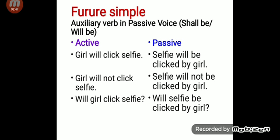So what we have seen here: selfie is the subject in passive form, will be is the auxiliary verb, clicked is the verb's third form, then by, then girl. Girl was the subject in active voice, and we have converted it into the object in passive. In passive voice, the main verb should always be in the verb's third form.